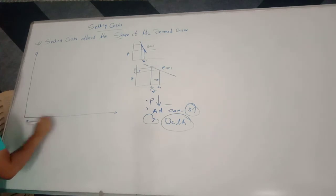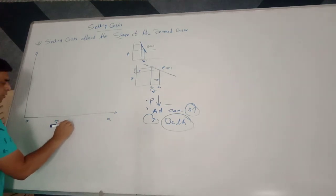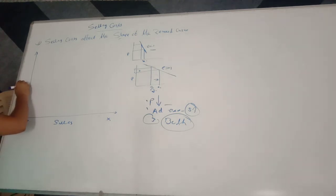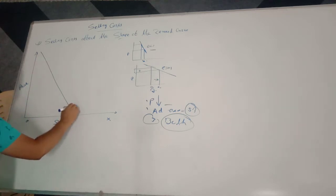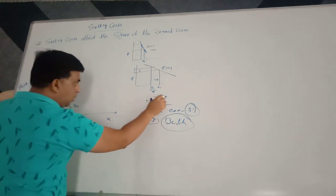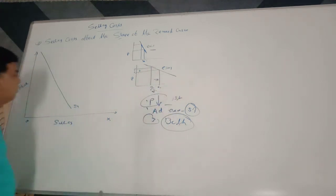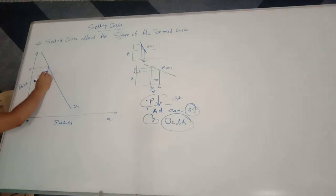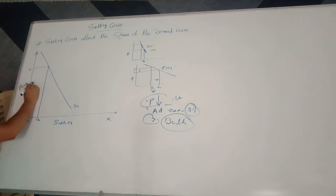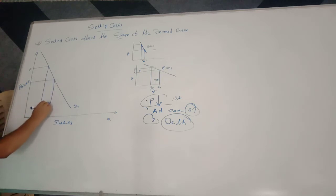In the diagram, the x-axis represents sales or demand for the product, and the y-axis represents price. Using only the first alternative — reducing price — suppose the original price of the product is OP and original sales of the firm is OQ. When we reduce price from OP to OP1, there is an increase in the sales from OQ to OQ1.